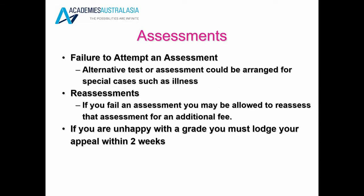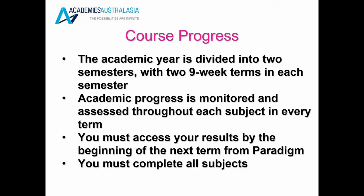Assessments. Failure to attempt an assessment — alternative tests or assessments could be arranged for special cases such as illness. Reassessments — if you fail an assessment, you may be allowed to reassess for an additional fee. If you are unhappy with a grade, you must lodge your appeal within two weeks. The academic year is divided into two semesters with two nine-week terms in each semester. Academic progress is monitored and assessed throughout each subject in every term, and you must access your results by the beginning of the next term from Paradigm.